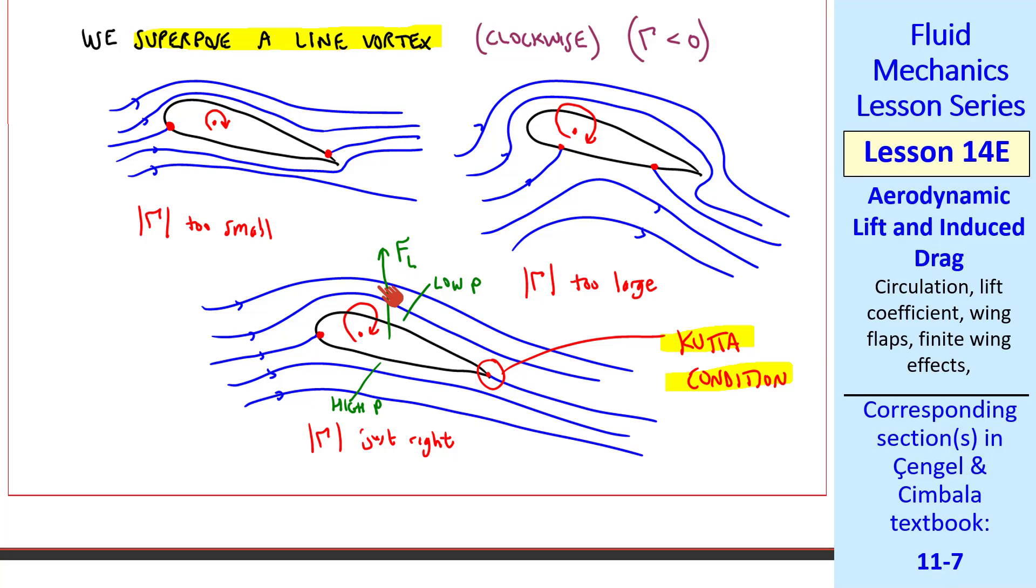Of course, in real life, there are boundary layers, but it turns out that as long as the airfoil doesn't stall, in other words, as long as the boundary layer doesn't separate somewhere along this upper surface, it turns out that this type of potential flow calculation does extremely well in predicting the lift.